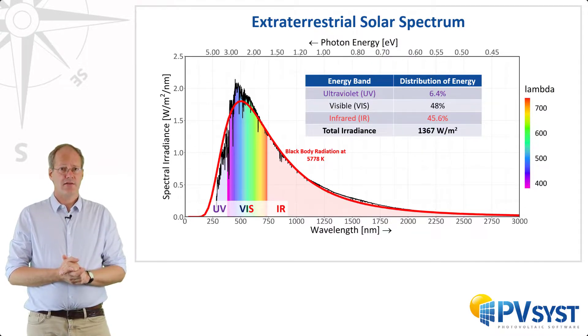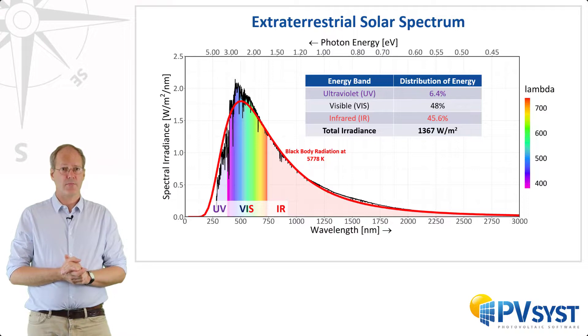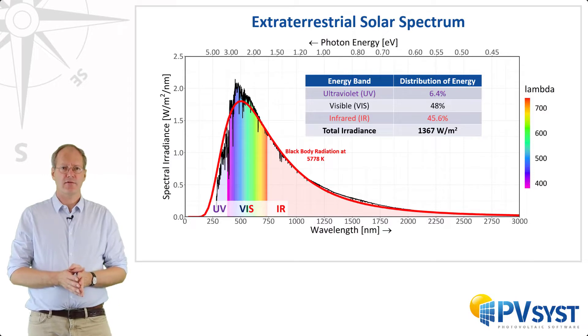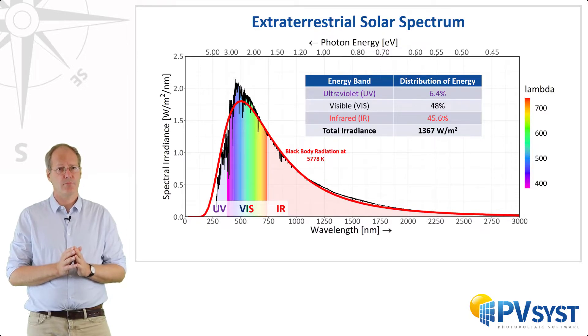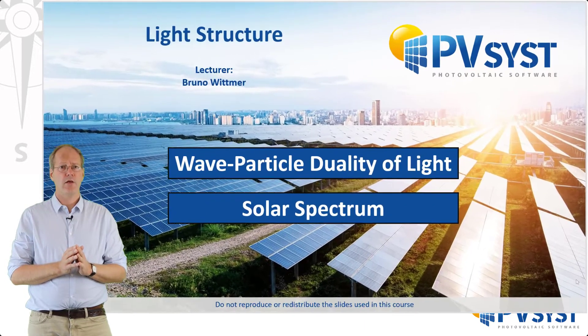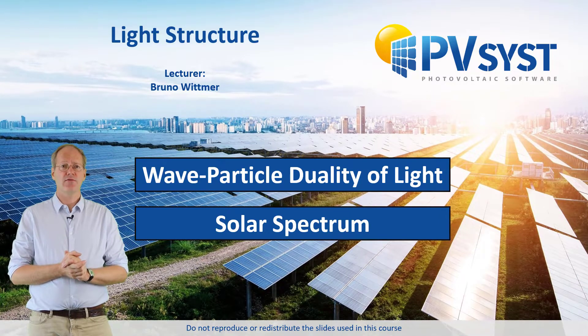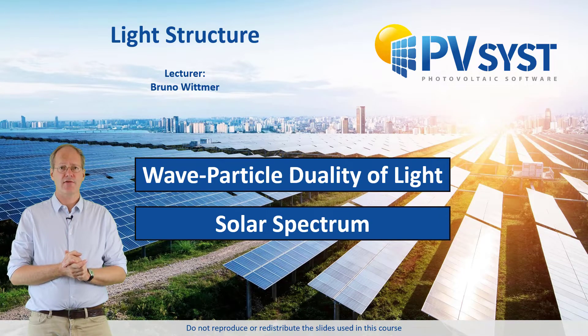Remember that this is the extraterrestrial spectrum. When light travels through our atmosphere, some of it is absorbed and some of it is scattered. So if we put a solar panel at ground level, it will not receive this irradiance. We will see the effect of absorption of the atmosphere on the solar spectrum in the next video. Here we covered the wave-particle duality of light and how we can use the properties of particles and waves to describe light. We also went over the electromagnetic spectrum and specifically the extraterrestrial spectrum of light.